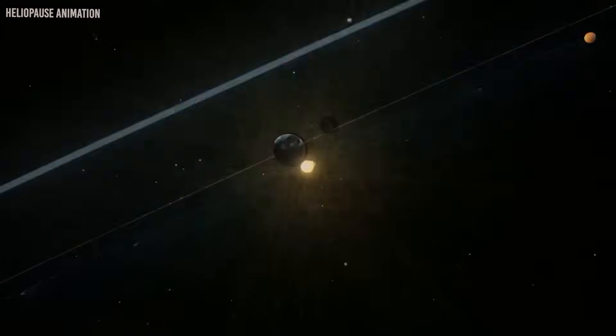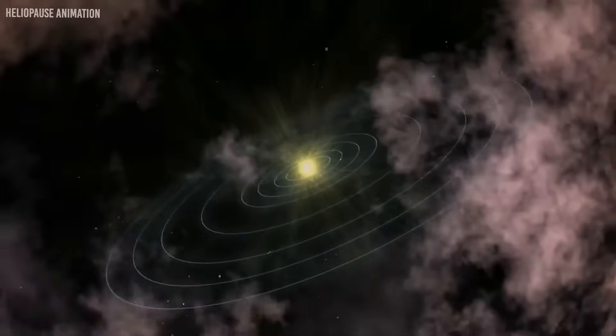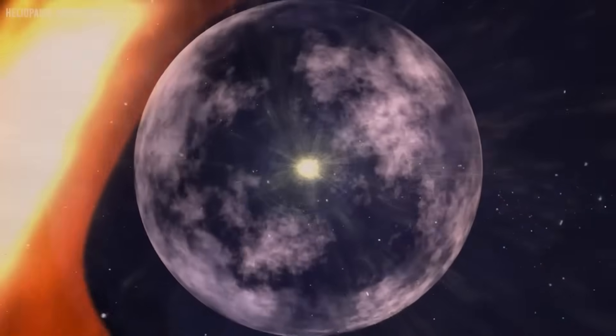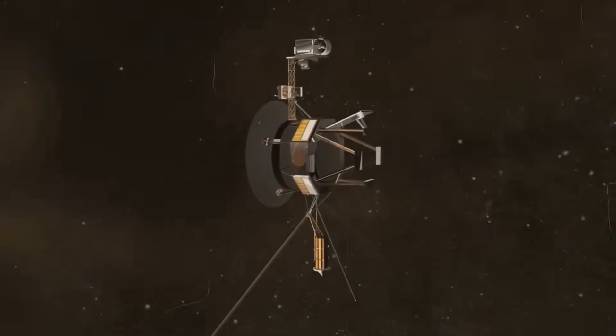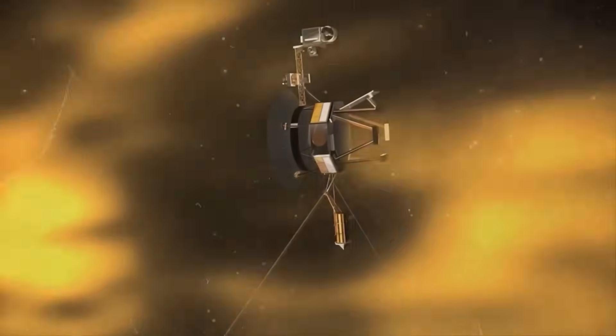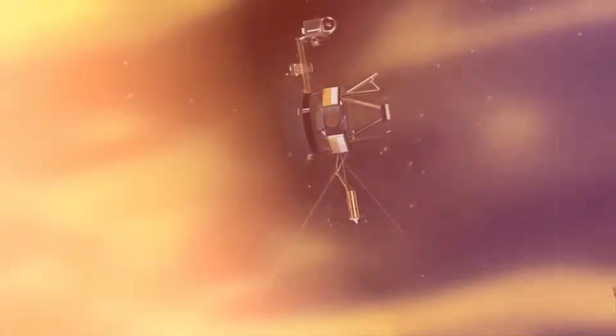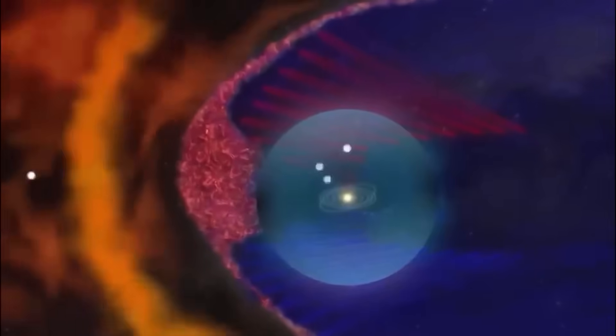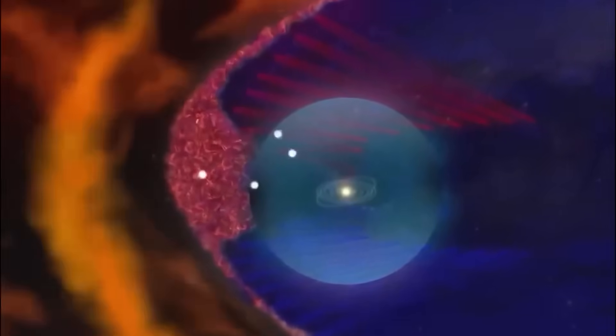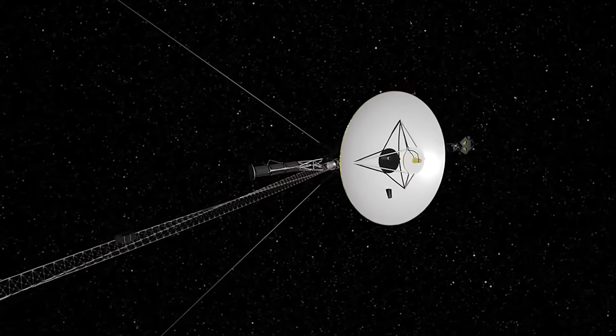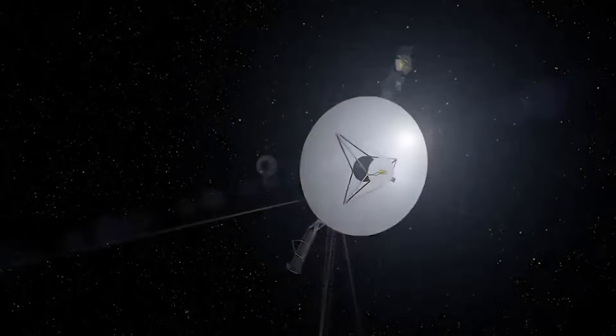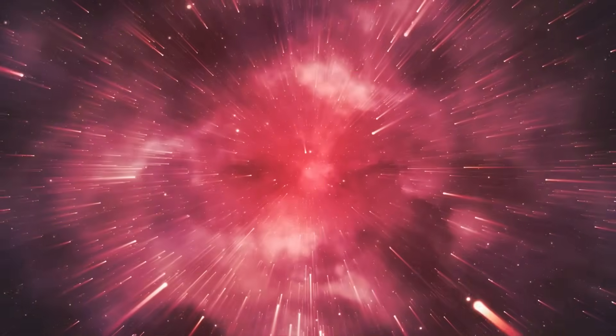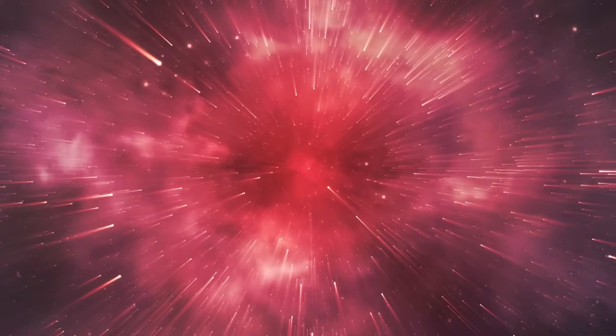A region just beyond the heliopause, where solar winds end and the true interstellar medium begins. That area, previously thought to be barren, now appears to house an energy field unlike any we've catalogued. It pulses, it moves, and it seems to react, subtly, to the presence of Voyager 1. It's as if the probe wasn't merely passing through a random part of space, but as if something there had been waiting, observing. And now that it's seen us, it's starting to respond.